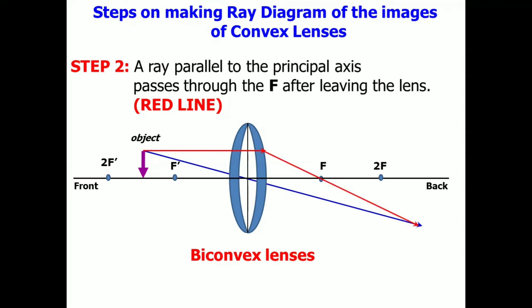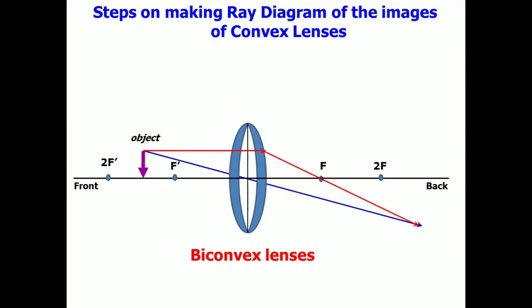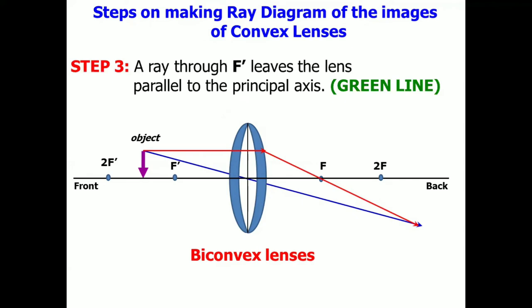So that's how you do it. And lastly, step number three. A ray through F leaves the lens parallel to the principal axis. And there you have it. We are done with the three basic steps on how to draw the ray diagram for convex lenses.